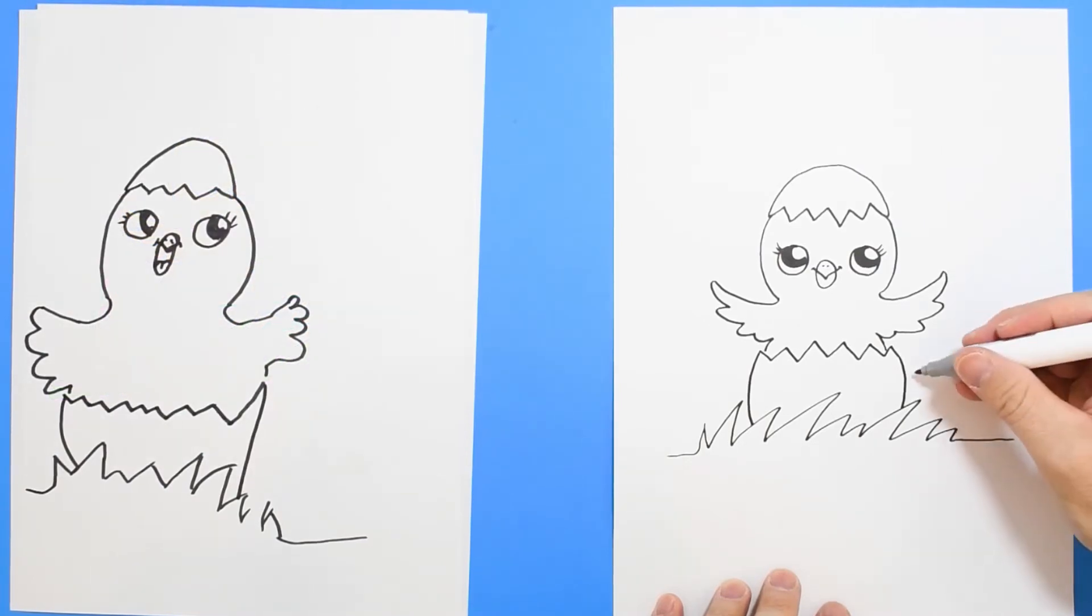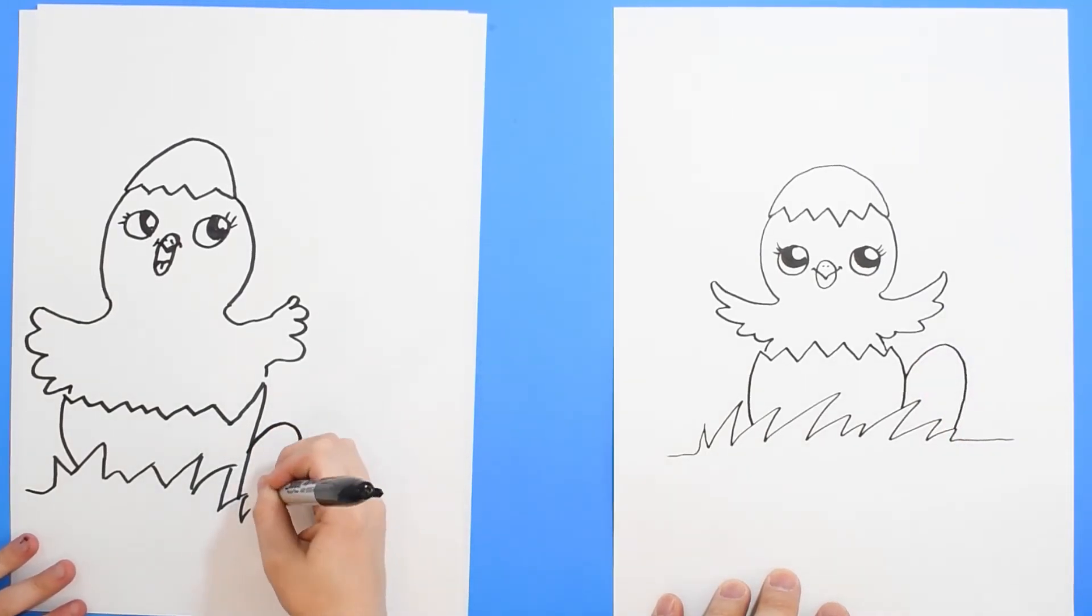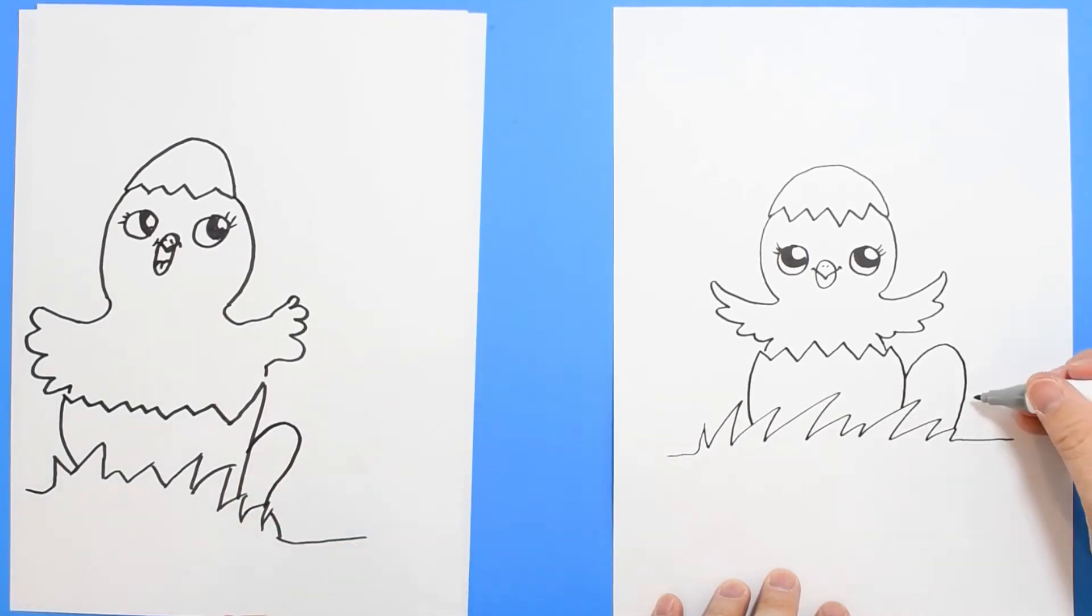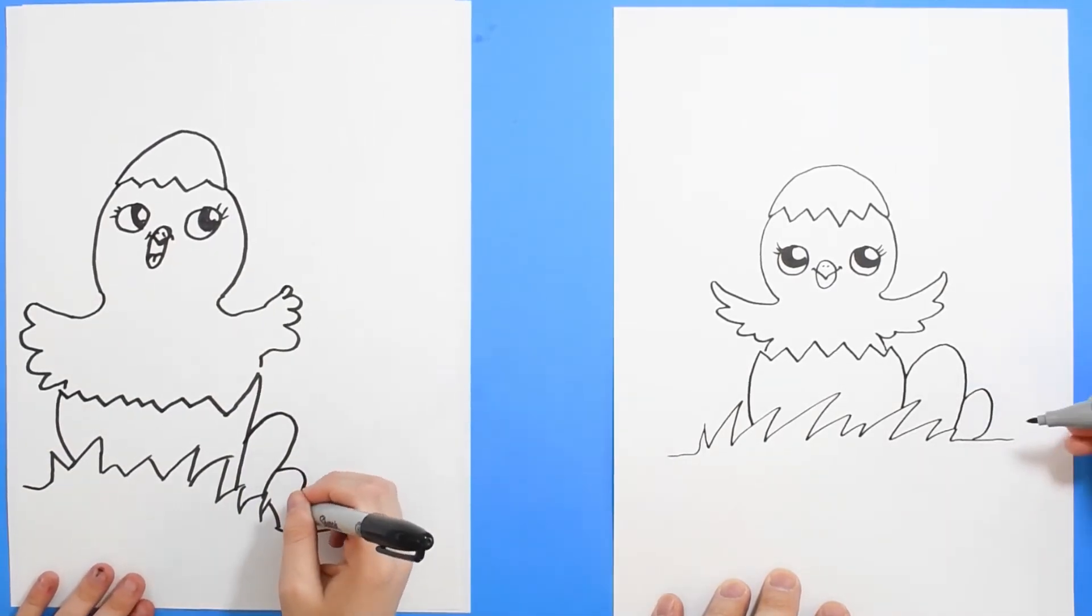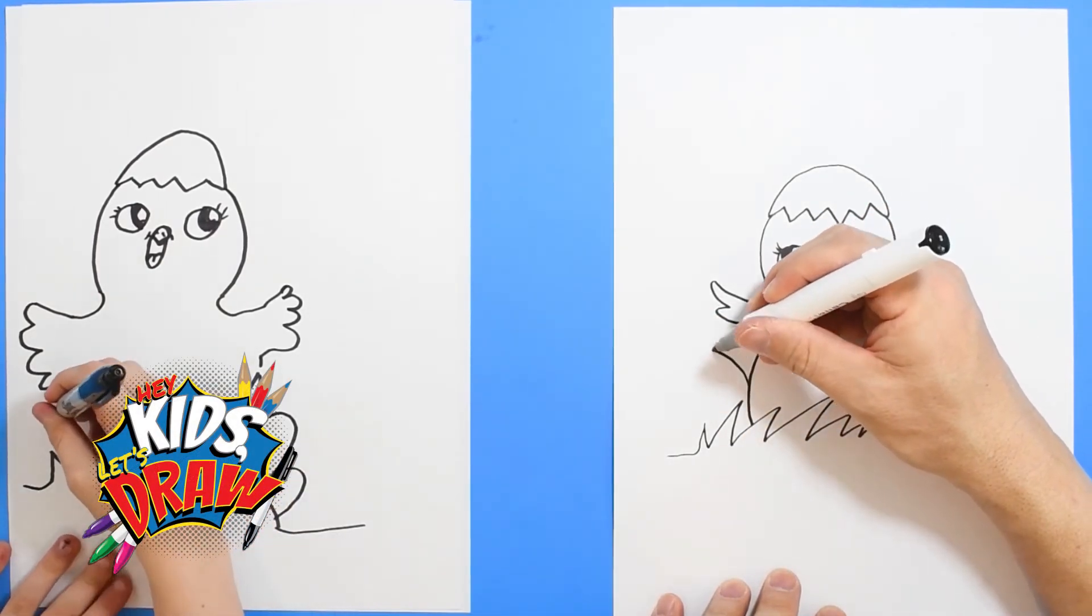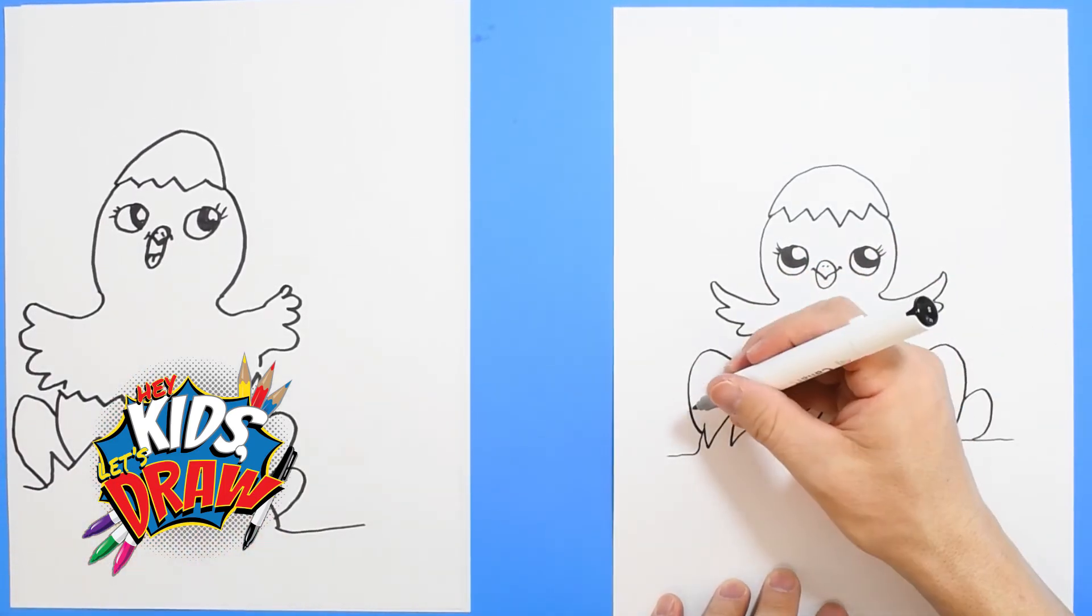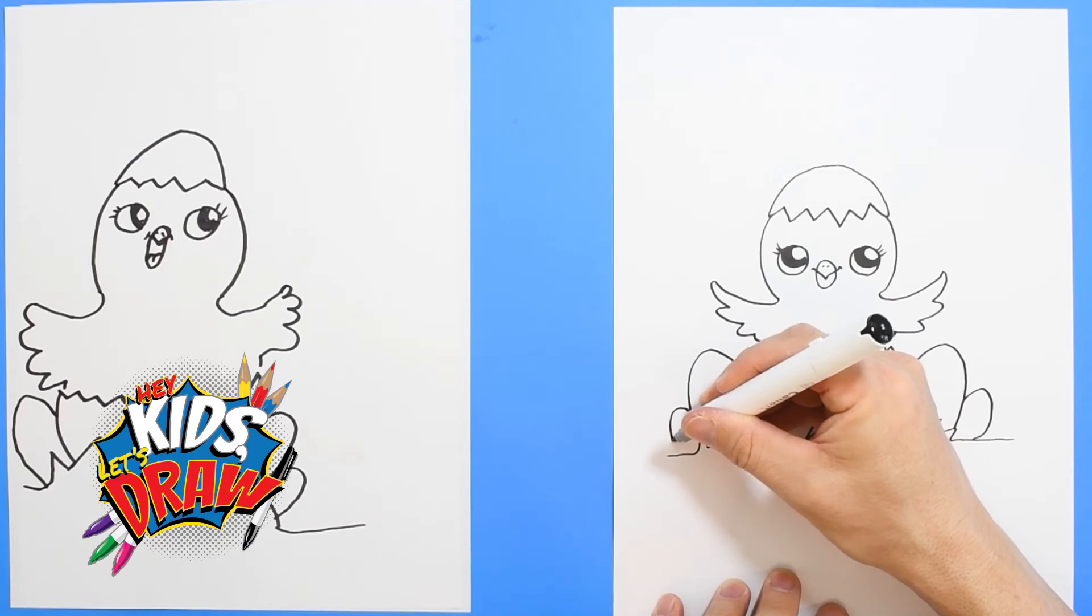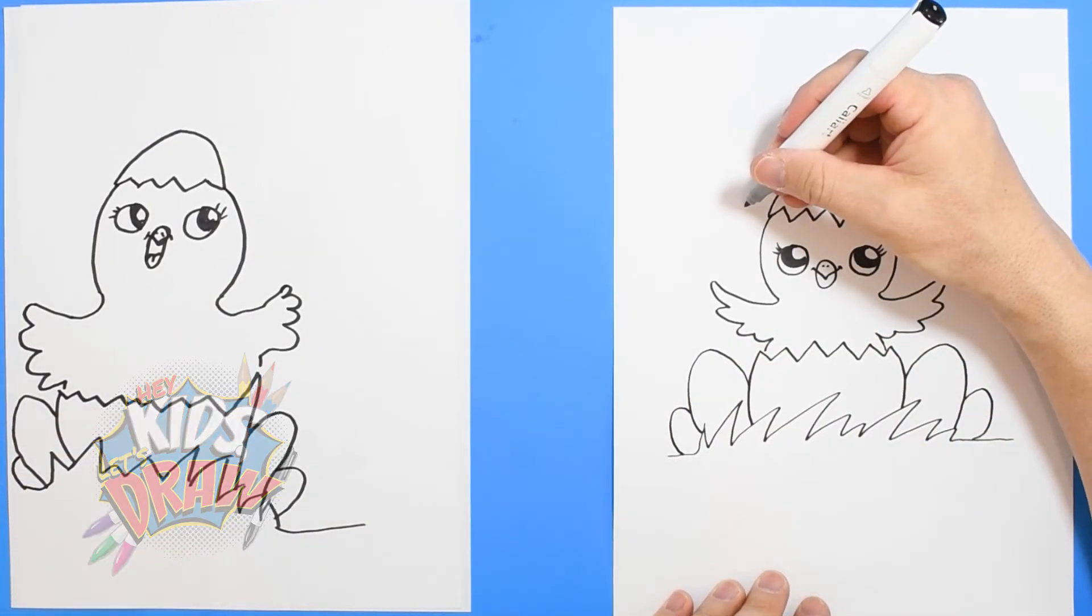Awesome. Now on the side, let's do a couple of Easter eggs peeking out. On this edge we'll do an Easter egg and connect it to the grass, and maybe another one over here, a little smaller one. Over here we'll do another one, an Easter egg, and maybe a small one right here.